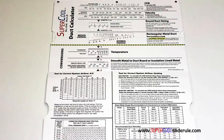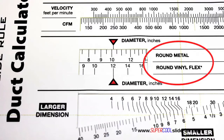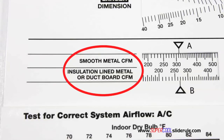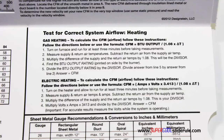Inside is packed with even more information. It performs sizing of both metal and flexible duct. It has the only direct reading conversion from smooth metal to insulation-lined metal we've ever seen. The majority of technicians have never been taught that if the insulation is on the inside of the ductwork, you cannot size it with a regular duct calculator. It has step-by-step directions for determining airflow through a gas furnace, electric furnace, or an air conditioning unit.